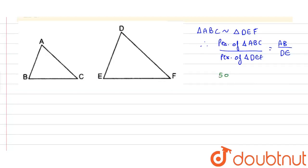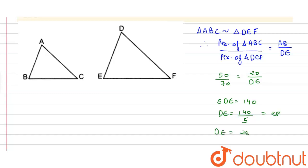By putting values we get 50 upon 70 is equal to 20 upon DE. By solving this we get 5 DE is equal to 140, or DE is equal to 140 upon 5, which is equal to 28. So DE is equal to 28 cm, which is our answer.